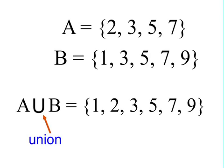The symbol U is easy to remember because U is the first letter in the word union. What union means is we take the two sets and combine them — anything that's in one or both of the sets is in the union of the two sets.